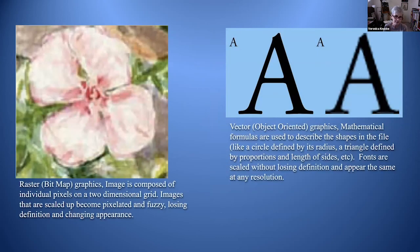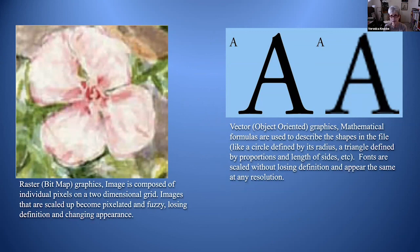Raster graphics are composed of individual pixels on a two-dimensional grid. When scaled up they become pixelated and fuzzy, losing definition. Vector graphics use mathematical formulas to describe shapes — a circle defined by its radius, a triangle by proportions and length of sides. Fonts can be scaled without losing definition and appear the same at any resolution. A sharp-edged letter is vector, while a fuzzy one is raster.